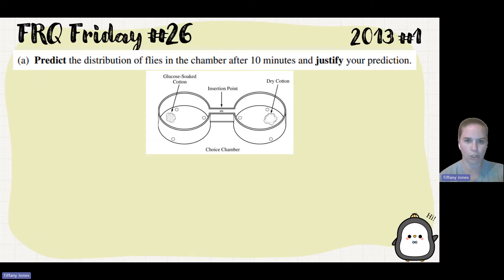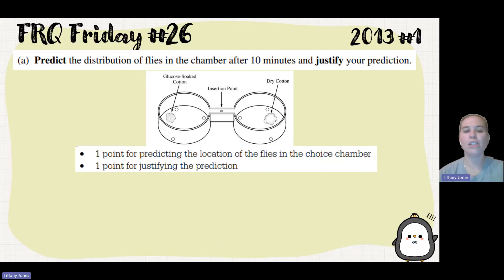Specifically, a fruit fly is going to want to go to sugar. So I will predict that the fruit flies will be found in the glucose-soaked cotton chamber because of the fact that they're going to be drawn by the scent because they believe that there is food in that chamber, and so they'll be drawn to that food.